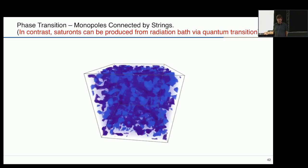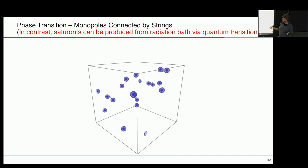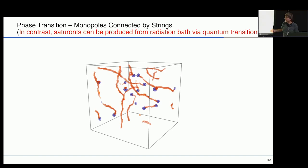Normally, defects like monopoles and cosmic strings appear as a result of a phase transition — here there is a first transition that forms the monopole and a second transition that forms cosmic strings connecting them.